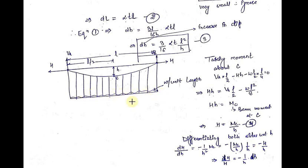If you see this diagram, the UDL is acting on the deck. But we say that this UDL is acting on the cable because whatever load acts on the deck is ultimately transferred through the suspenders to the suspension cable. In this diagram, suppose C is the lowermost point, the dip of the cable is small h, and small l is the horizontal distance between the two supports.